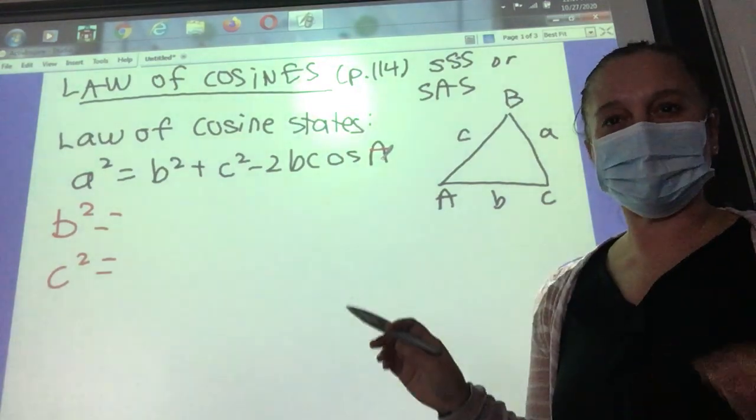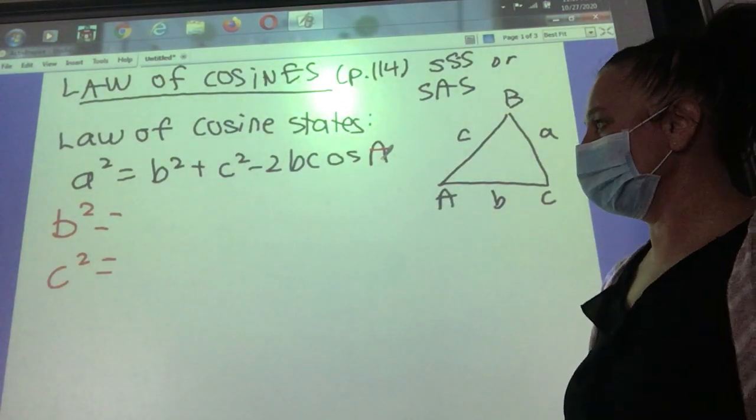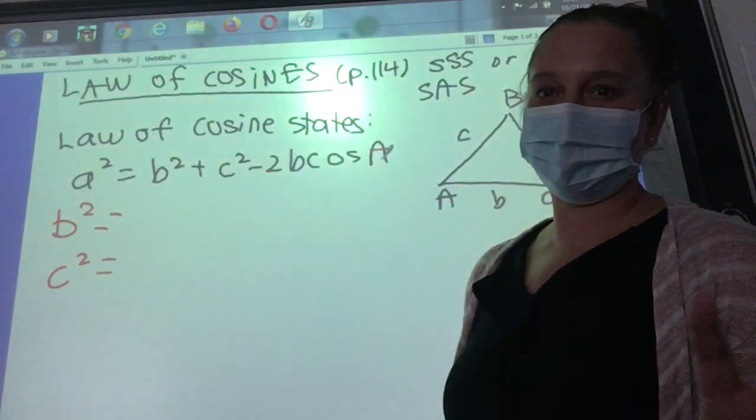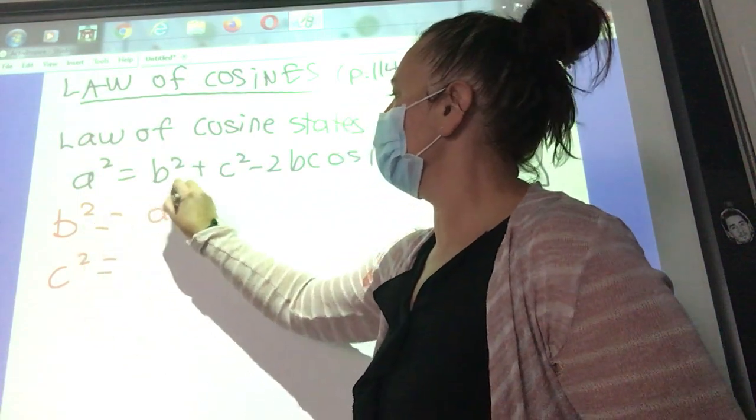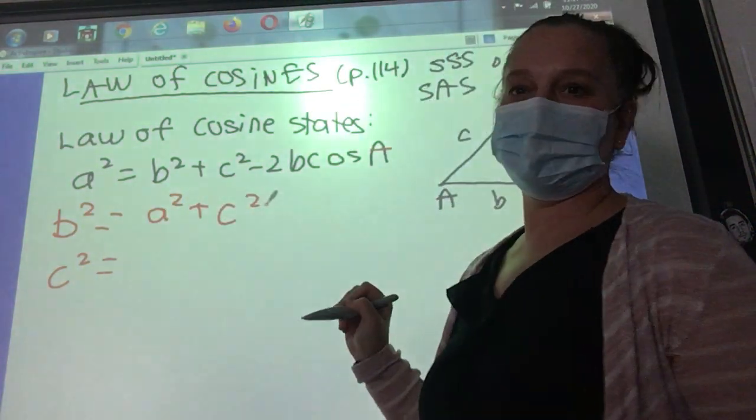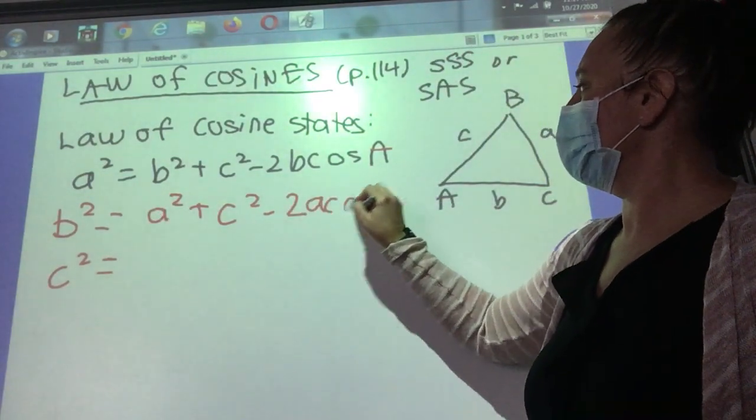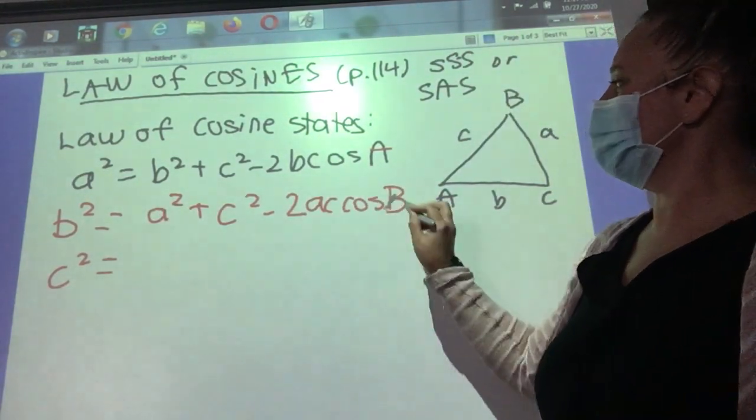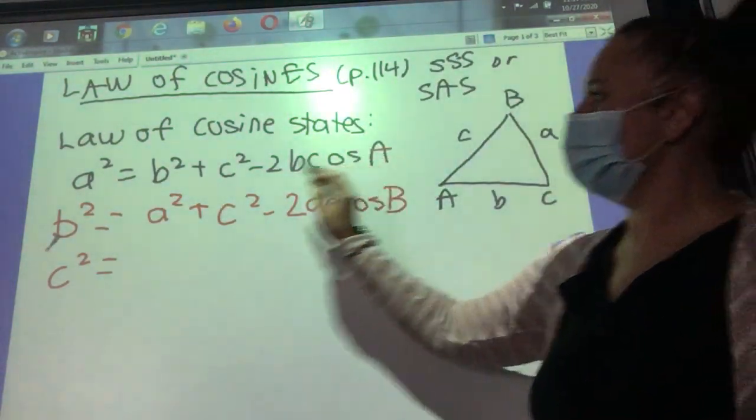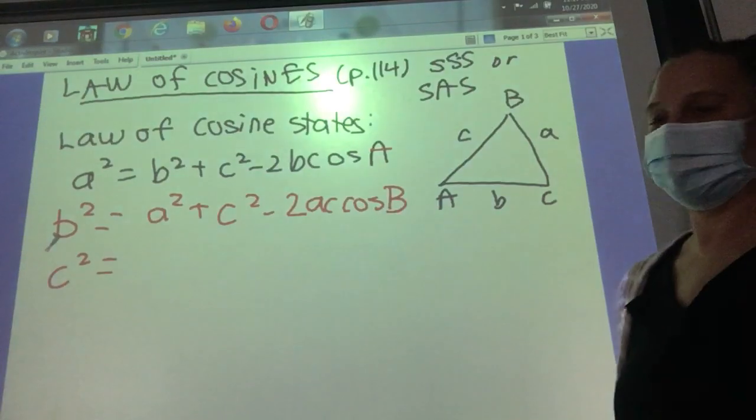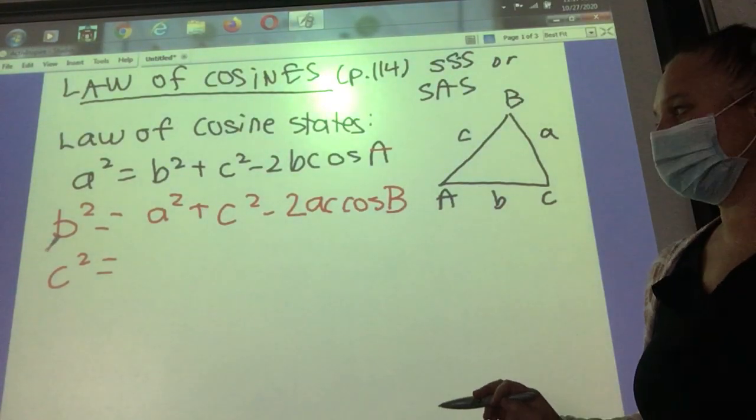What if you're given angle B or you're solving for angle B? Then this formula doesn't work. So the alternate version is instead of A squared, you'd use B squared. I think you can figure out the pattern. Now instead of, so the B squared's here, then the other two sides would be A and C. It's still 2, the two sides we're dealing with are AC, and now we're doing cos B. So if you notice, angle B would be opposite side B, angle A opposite side A. And otherwise the other two sides are the same.